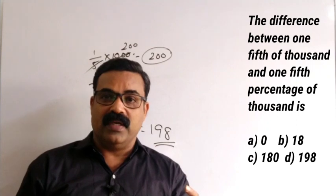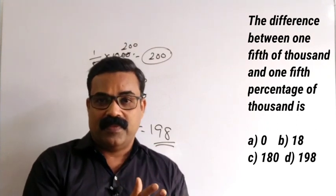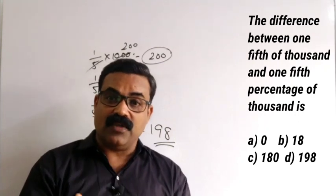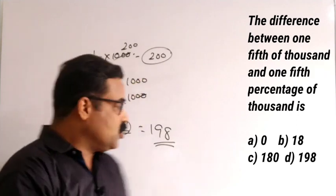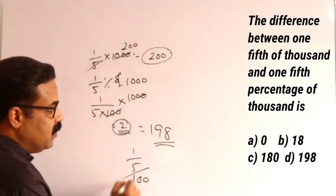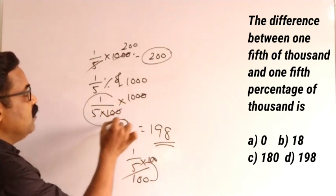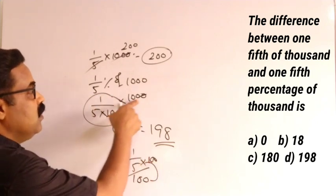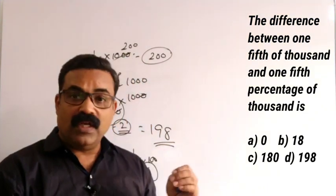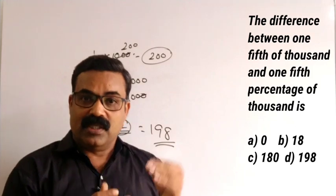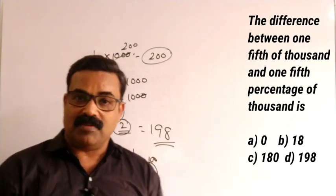One-fifth of 1000 means just divide 1000 by 5, so we get 200. One-fifth percentage of 1000 — how do you find percentage? Division by 100. So it is 1 by 5 divided by 100 into 1000, which gives 2. According to the question, we need the difference between these two, so the difference between 200 and 2 is 198. So 198 is the correct option.